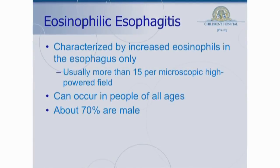Starting with eosinophilic esophagitis, it's characterized by increased eosinophils in the esophagus and really only in the esophagus. There's no hard and fast rule with how many eosinophils have to be there before you would give somebody the diagnosis. But as a general guideline, people really start thinking about that problem at about 15 in a high-powered field. Some people use 20 as their cutoff, some people use 24.